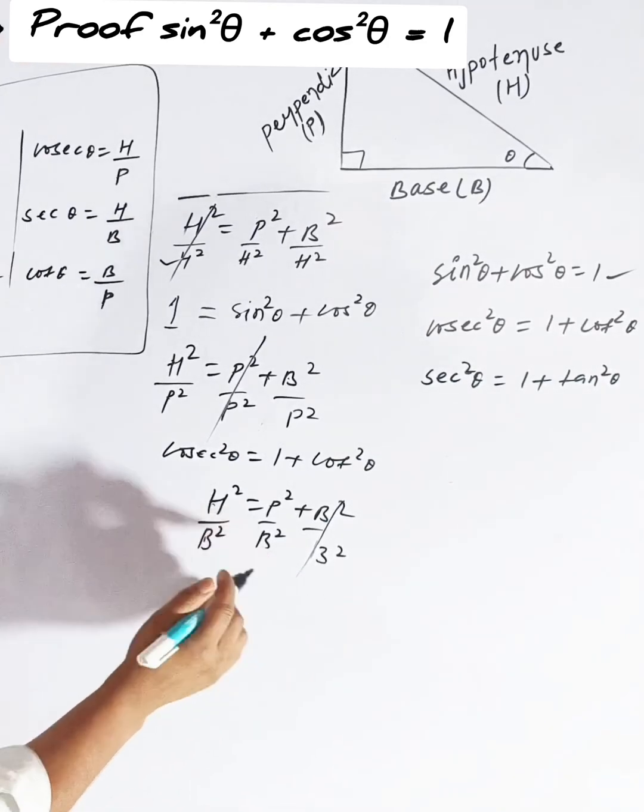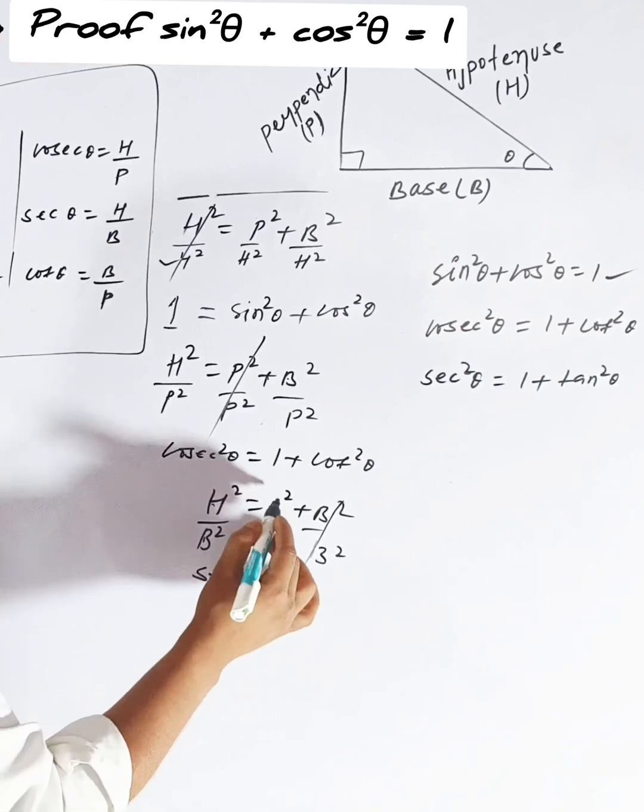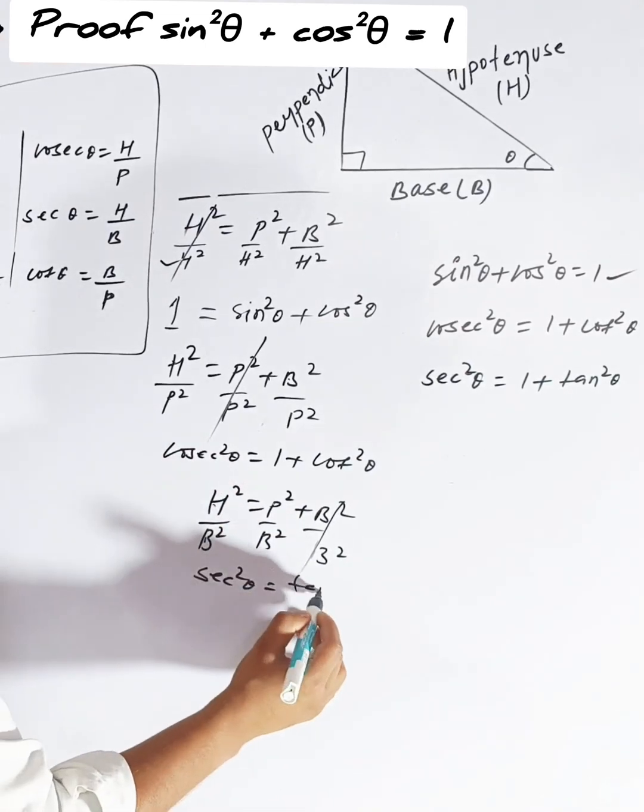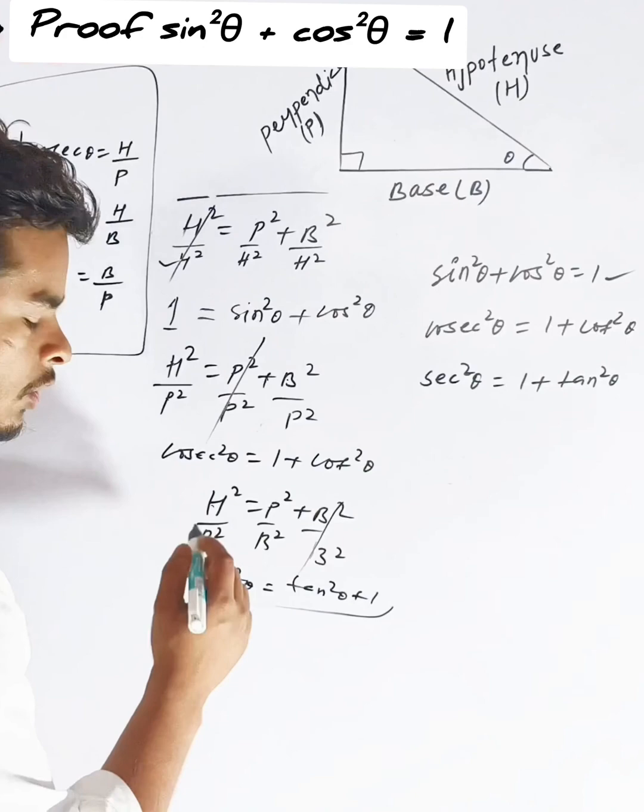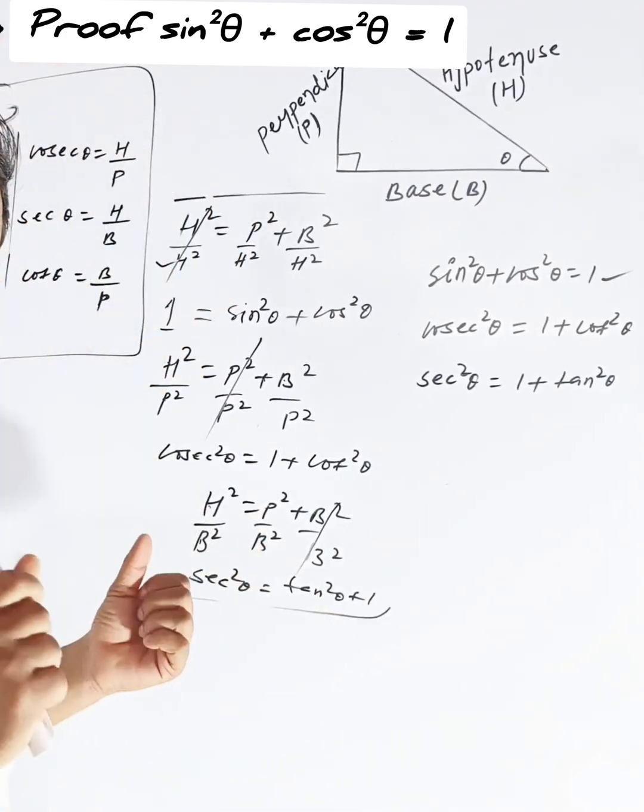h by b will become your sec squared theta. p/h is tan squared theta, and this is your one. So I hope you must have understood this in a very easy way.